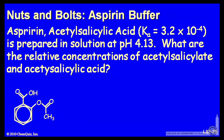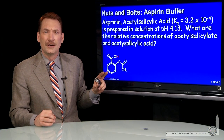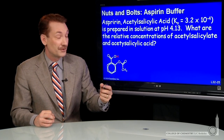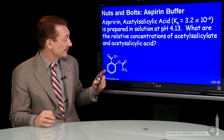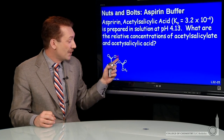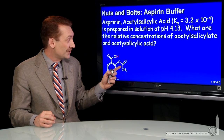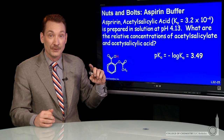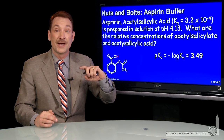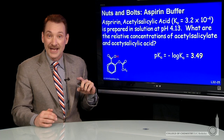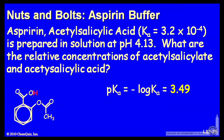Acetylsalicylic acid looks like this — a relatively complex molecule. The acidic proton is this one. In general, we won't make you guess that for complicated molecules; we'll just tell you what the acidic proton is, unless it's very obvious. The acid dissociation constant for the reaction where this proton leaves the molecule is 3.2 times 10 to the minus 4, so the pKa is minus log of 3.2 times 10 to the minus 4, which equals 3.49.